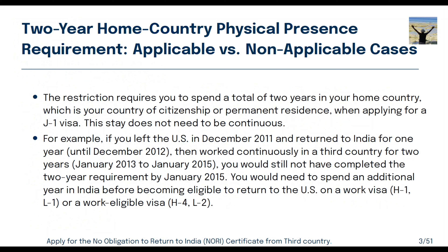This video covers the know-how and flowchart of the process stages: Stage 1, Stage 2, and Stage 3. If you have a J1 visa or J2 dependent visa with the two-year home residency requirement printed on your visa page in your passport, you must spend two years in your home country. For example, if you are from India, let's say you left the US in December 2011 and returned to India for one year.